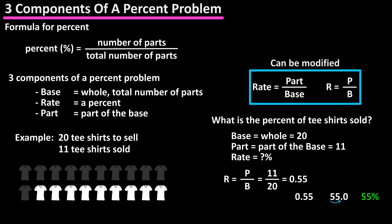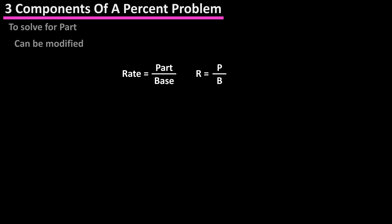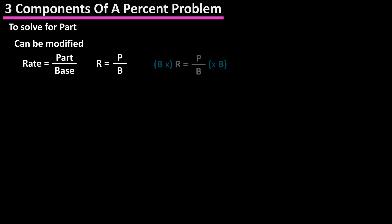This formula, with the three components, can be modified to also solve for base or part. To solve for part, we can multiply both sides by base, which will cancel the base out, and leave us with base times rate equals part. Cleaning this up, part equals rate times base.